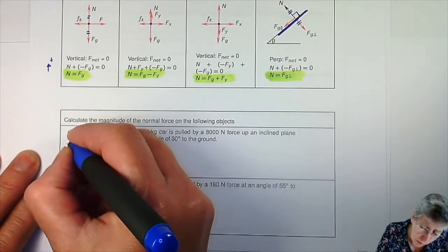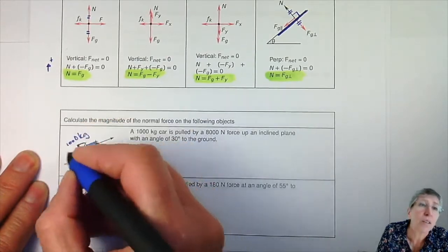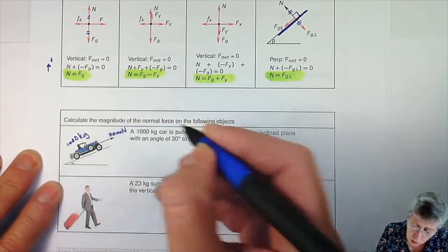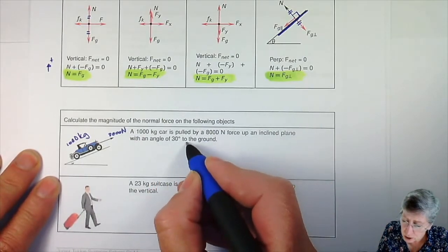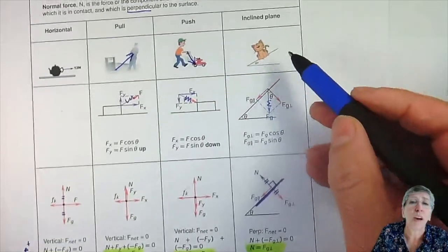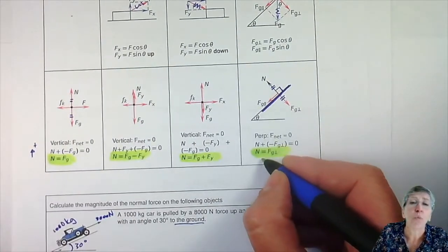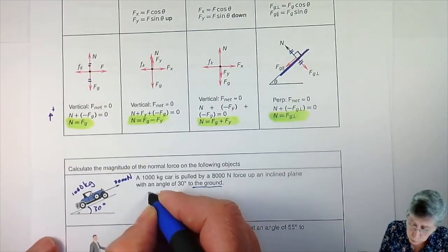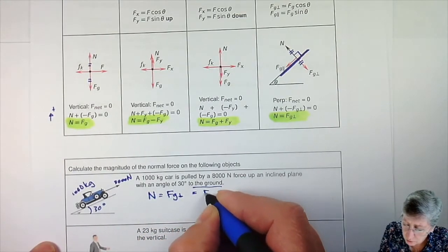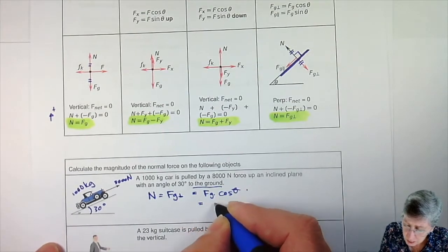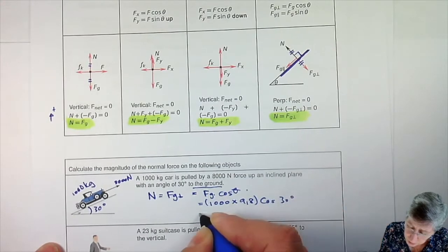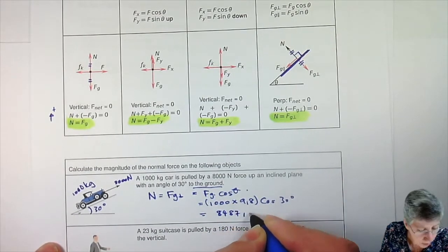First off, you've got a car of 1000 kilograms. Then they tell you it's pulled by an 8000 newton force up an inclined plane, and they give you the angle to the ground - that angle of 30 degrees. On an inclined plane, the normal force is always equal to gravity perpendicular, and for gravity perpendicular, it will be the whole gravity times cos of that bottom angle. So we end up with 1000 times 9.8 times cos of 30, and that gives you 8487.05 newtons.